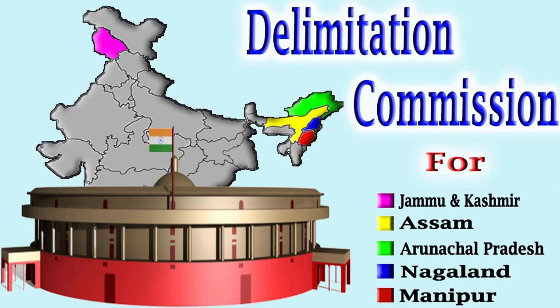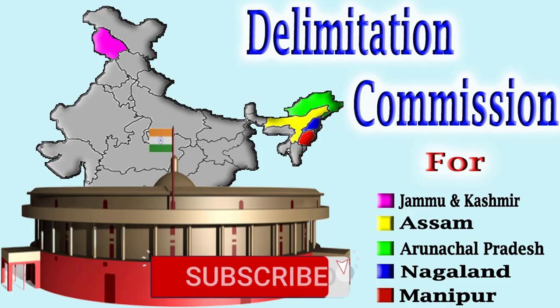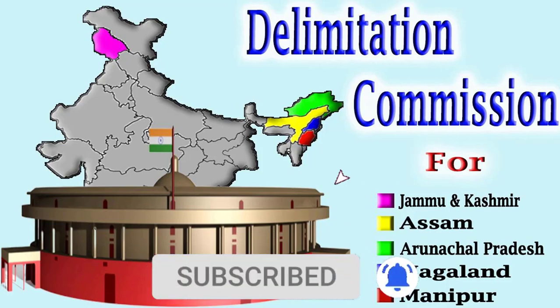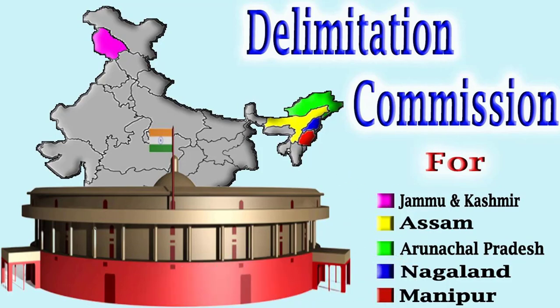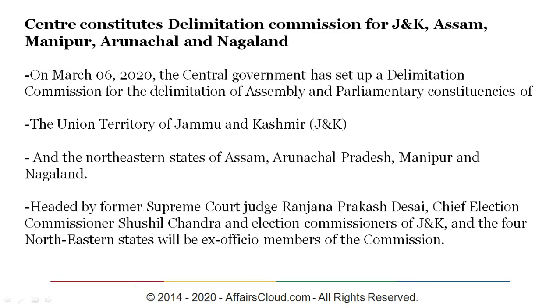Hello everyone, welcome to Fastclock. On the 6th of March, the union government had constituted a delimitation commission for the states of Jammu and Kashmir, Assam, Arunachal Pradesh, Nagaland and Manipur. So what is the delimitation commission? What will be the outcome of the constitution of the delimitation commission for these states? These are all topics that we will look into in this video. So without delay, let's proceed.